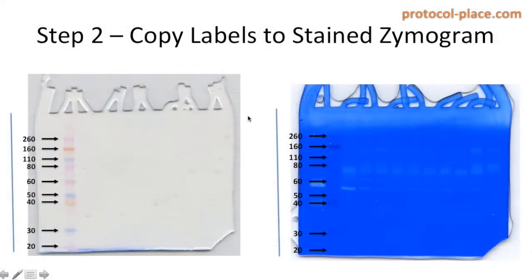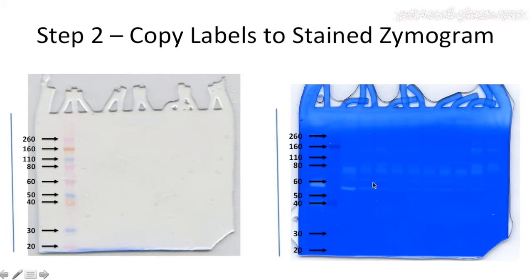Now that we've identified the molecular weight of all these different proteins in our zymogram, it's going to make it possible for us to figure out, or at least take a good guess at, the identity of these different MMPs. For example, if I look at these bands, they fall between the 50 and 60 kilodalton markers, meaning these MMPs are around 55 kilodaltons, which corresponds to one of the active forms of MMP2. These other bands correspond to a molecular weight of around 65 kilodaltons, which is one of the forms of ProMMP2.